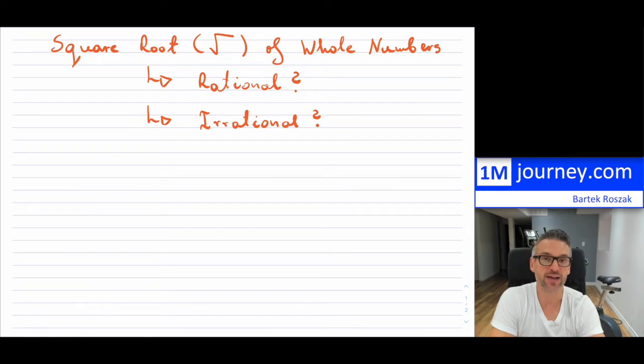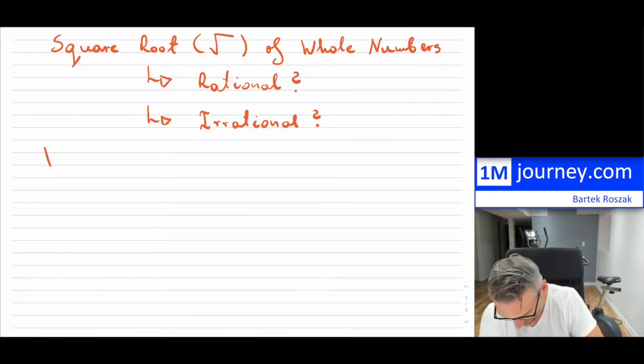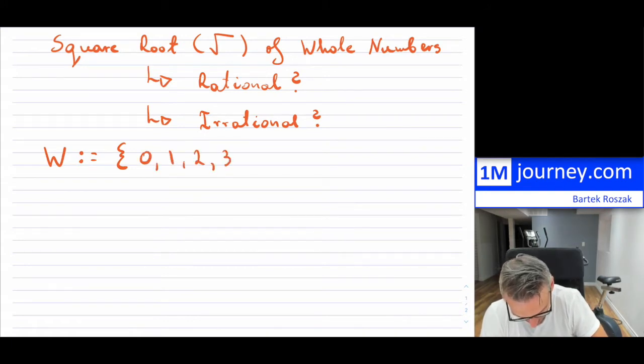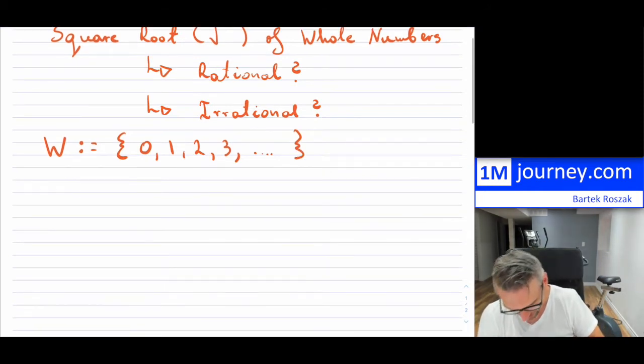We can actually tell when that happens. So in terms of whole numbers, I'm going to designate here. So whole numbers, say this is the set. All right, so 0, 1, 2, 3, and so on. And now we can kind of break this down.